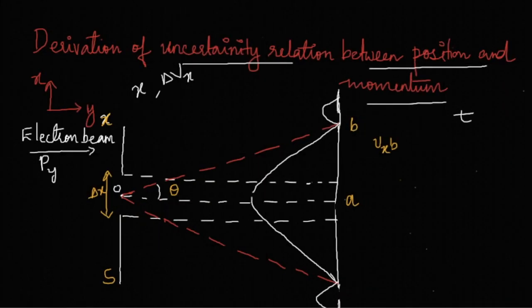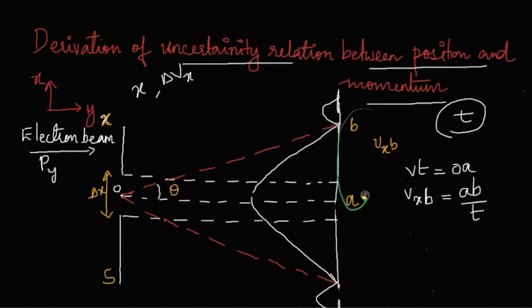Let the time taken by the electron to reach from O to A be the time t, and let vxb denote the value of vx at point B. From the figure, v into t is the distance OA, and vxb will be the distance AB divided by time. Therefore, AB will be vxb into time t.